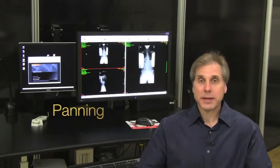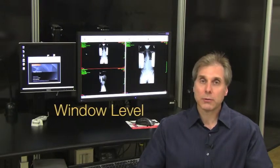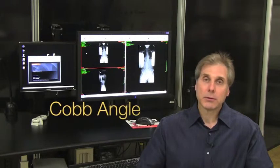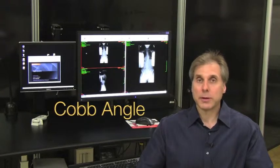We also have a number of key tools that allow you to interpret the images. Some of the basic tools include panning, zooming, window level, and shoe size. We also have some advanced orthopedic tools such as Cobb Angle, which allows you to measure the curvature of the spine, coxometry, goniometry, pelvis measurements, and even spine labeling and more.